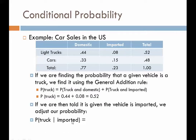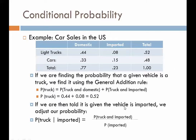In probability notation, this reads: the probability that we pick a truck given that we already know it's imported. Now I've narrowed it down to just the imported column — the only vehicles I'm considering. Of these vehicles, the trucks are only 8% of the imported vehicles, or 8% of total vehicles overall. So we take the probability that it's a truck AND imported — the intersection of that row and column — and divide it by the new sample space, which is the percent of the population made up of imports.